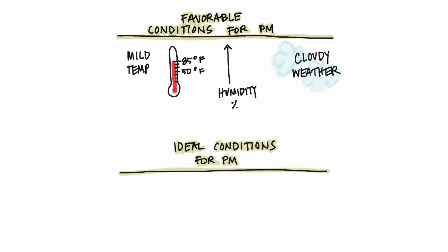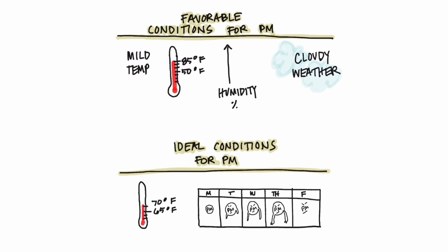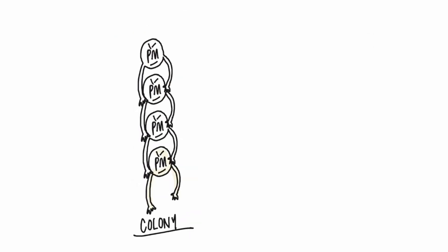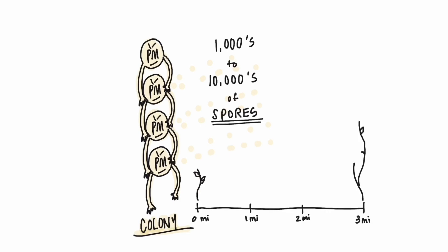Under ideal conditions of 65 to 70 degree Fahrenheit weather, the fungus can complete its life cycle in as little as five days on highly susceptible varieties. A typical powdery mildew colony produces thousands to tens of thousands of spores that are readily spread by wind and can travel multiple miles to infect other plants.